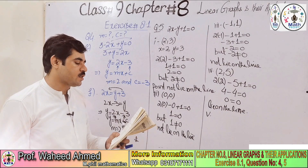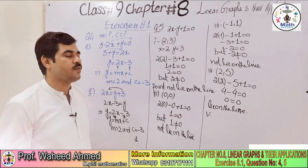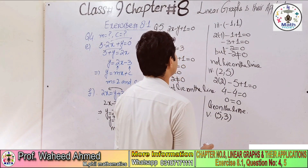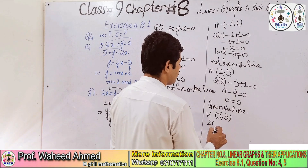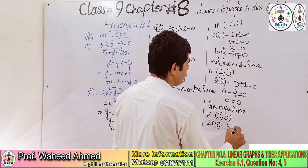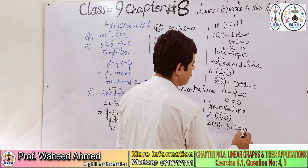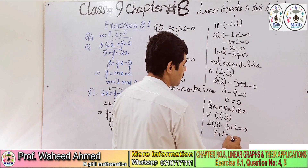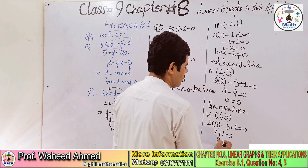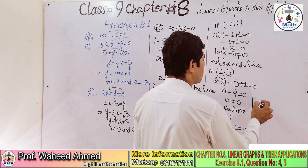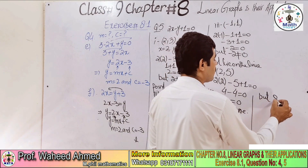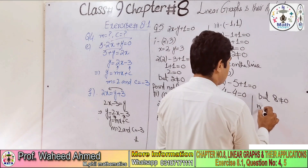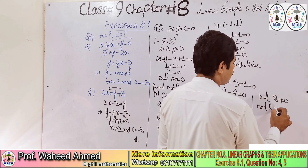Part 5: the point is (5, 3). So x = 5 and y = 3. Applying: 2 × 5 - 3 + 1 = 0. That gives 10 - 3 + 1 = 8, so 8 = 0. But 8 is not equal to 0, so this point does not lie on the line.